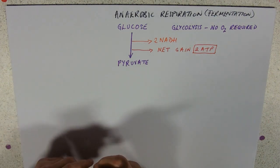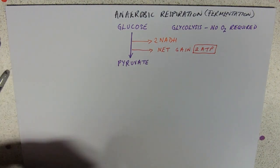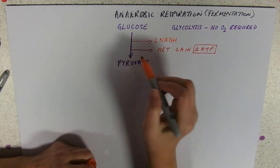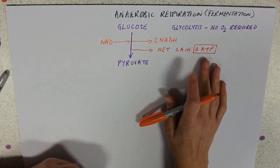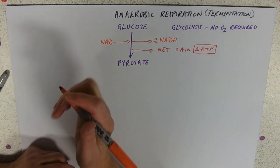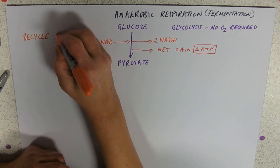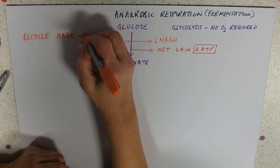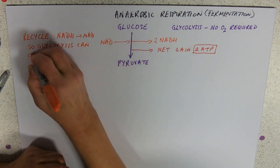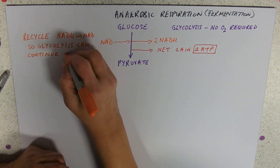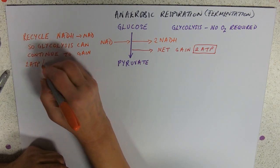But if there is no oxygen present, or more generally not enough oxygen present, you've got to be able to get your NADH back to NAD so that you can take the hydrogen away from the glucose, otherwise you're not going to get your net gain of 2 ATP. So in all sorts of anaerobic respiration, the main point is to recycle the NADH to NAD so glycolysis can continue, and the reason you'd want to do that is to gain 2 ATP per molecule of glucose.